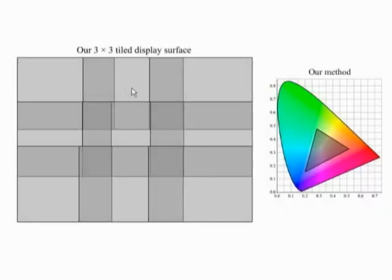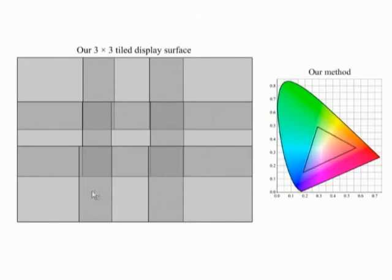Here we visualize the chrominance gamut and the brightness of our display after our correction procedure has been completed. Note that the chrominance gamut and the brightness vary smoothly across the display.